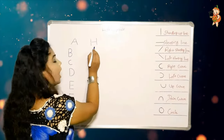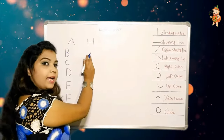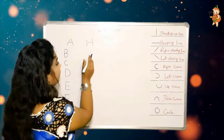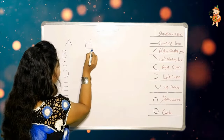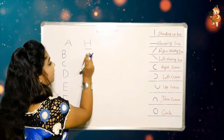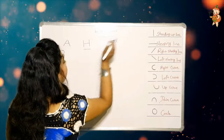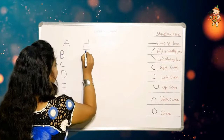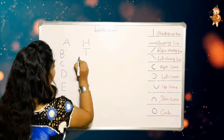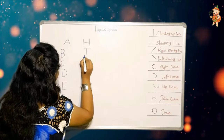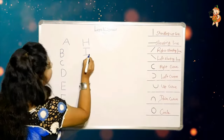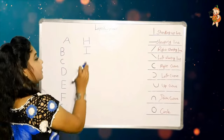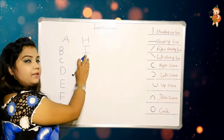How to make I? One sleeping line, one standing up line, and another sleeping line. Let's make I.